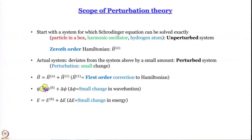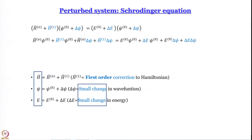Since the zeroth-order wave functions form a complete orthonormal set, and we are talking about a very small distortion, even the perturbed wave functions are roughly going to be in that same function space. So whatever the perturbed wave function is, we should be able to write it as a linear combination of all the orthonormal wave functions of the unperturbed system — essentially, ψ = Σᵢ cᵢ ψᵢ⁽⁰⁾. We will worry about wave functions later; right now we are focused on finding δE.